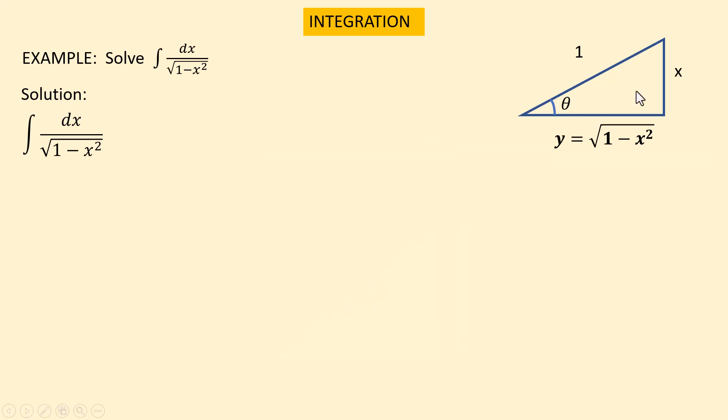We know that sine theta equals opposite over hypotenuse, so sine theta equals x over 1, then x equals sine theta. If we differentiate both sides we get dx equals cosine theta d theta.